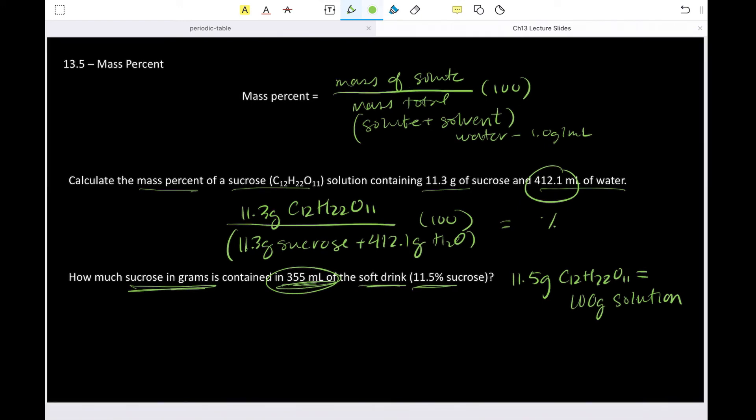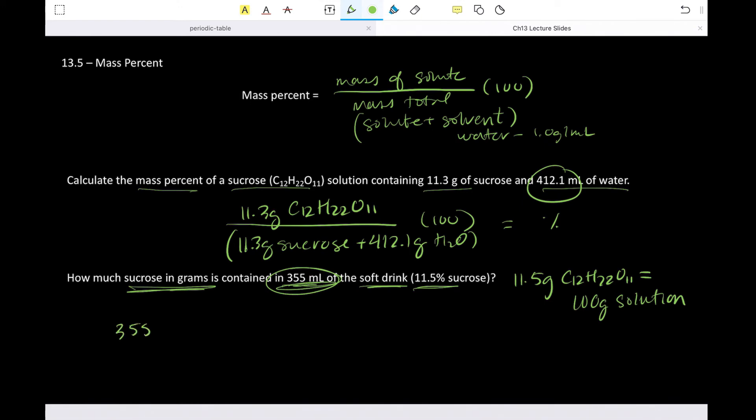So then we would take our 355 milliliters of solution because soft drink is the solution, where we have the solute and solvent mixed together. And then we would go from mils of solution to grams of solution. And then we would then insert this, which says that for every 100 grams of solution there are 11.5 grams of sucrose.